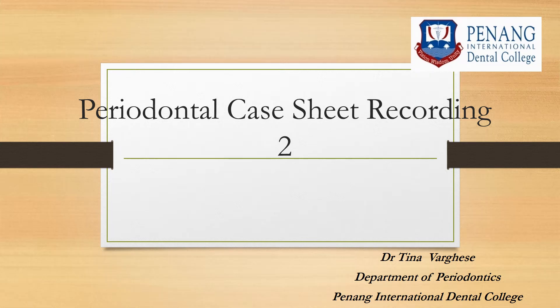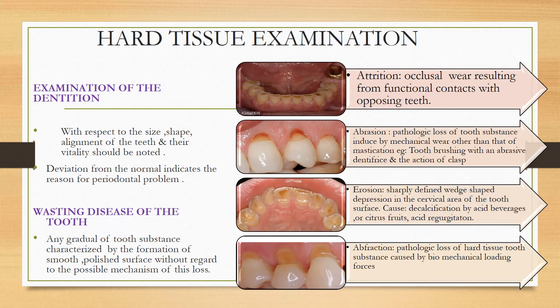Coming to the second part of periodontal case sheet recording: hard tissue examination. Examination of the dentition is very important with respect to the size, shape, and alignment of the teeth, and their vitality should be noted. Deviation from the normal indicates the reason for periodontal problems.